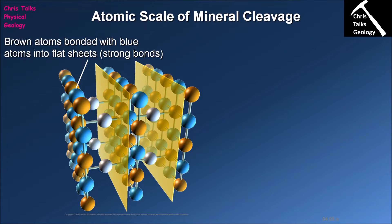All that means is your crystal naturally has planes of weakness along which it will preferentially split, and those planes of weakness run parallel to each other. The question is: where are these planes of weakness coming from? It's all down to the way the atoms are arranged in the crystal lattice.